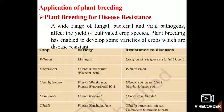And finally in Chilli, a variety known as Pousa Sadabahar, which is resistant to chilli mosaic virus and tobacco mosaic virus, has been created through plant breeding science.